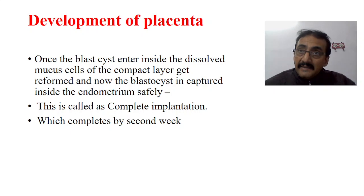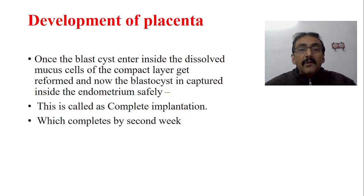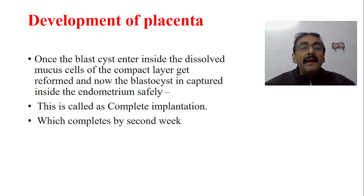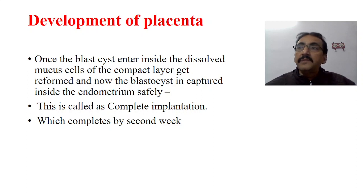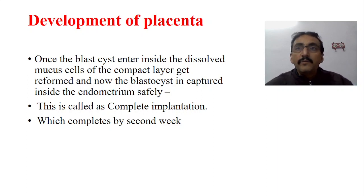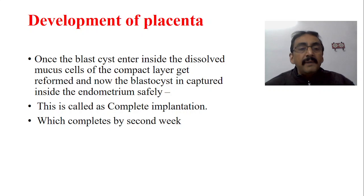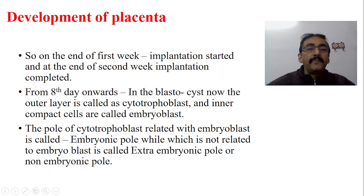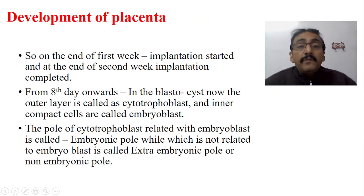Once the blastocyst enters inside the dissolved mucus cells of the compact layer, the dissolved area gets reformed and the blastocyst is captured inside the endometrium very safely. This is called complete implantation. Previously it was incomplete implantation. Once captured inside the endometrium, there is no question of falling back. Complete implantation is achieved by the end of the second week; implantation starts at the end of the first week.